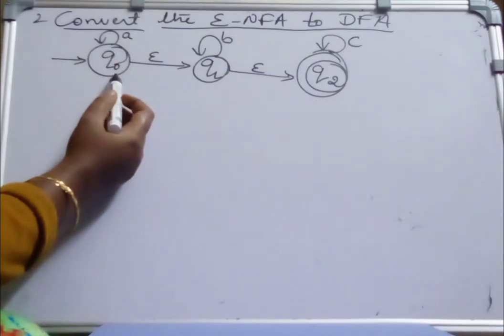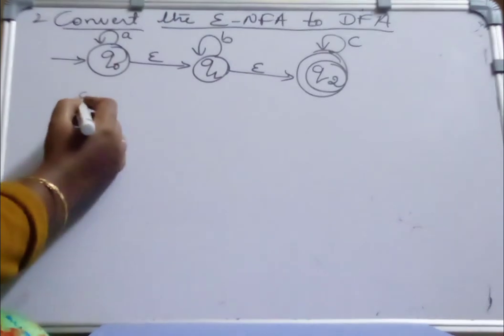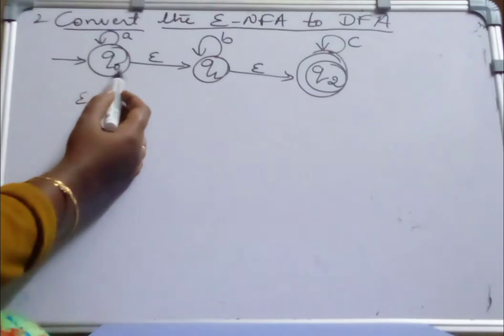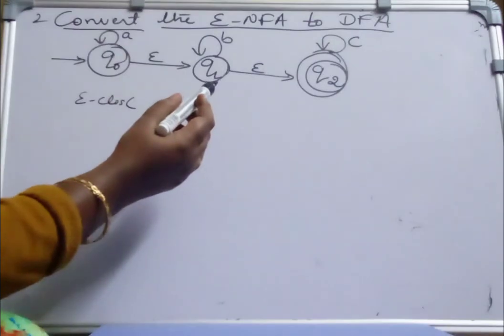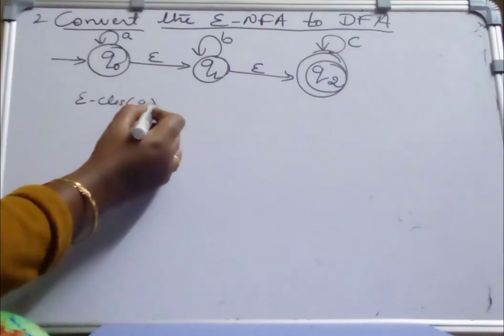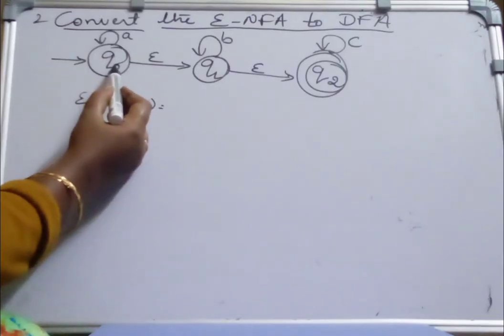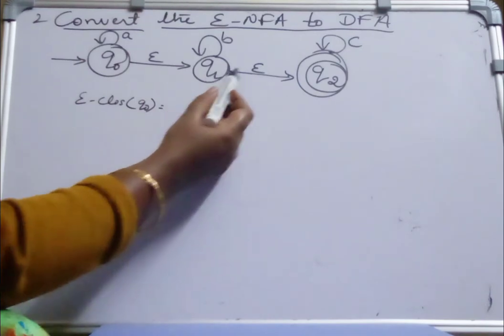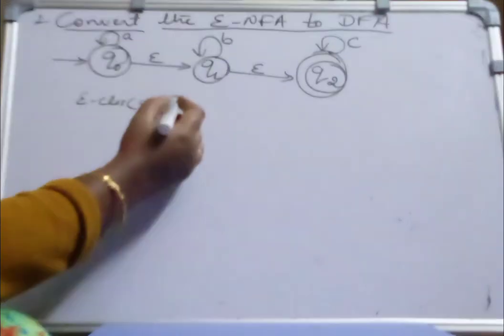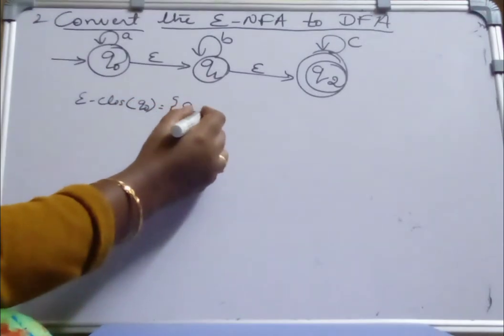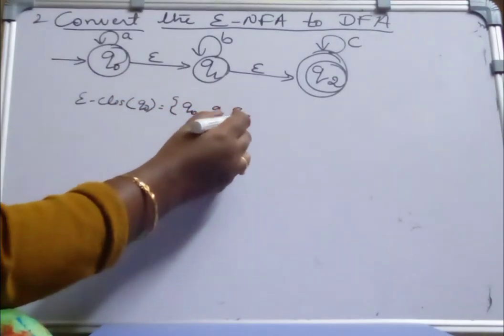What is the Epsilon closure of Q0? To identify the Epsilon closure of Q0, we find from state Q0 which states it can reach on Epsilon transitions. From Q0 on Epsilon transition it is moving to Q1, and from Q1 on Epsilon transition it is moving to Q2. So Epsilon closure of Q0 is {Q0, Q1, Q2}.